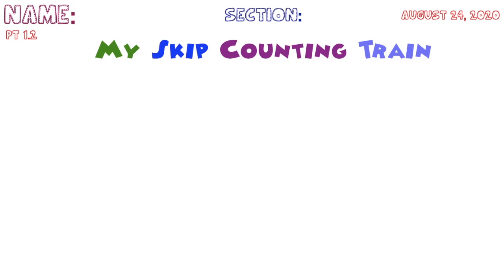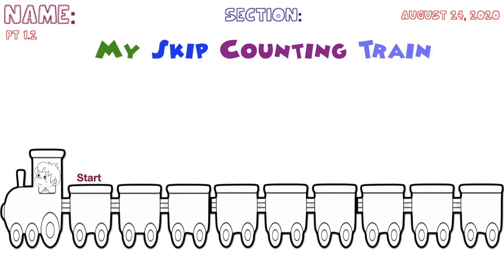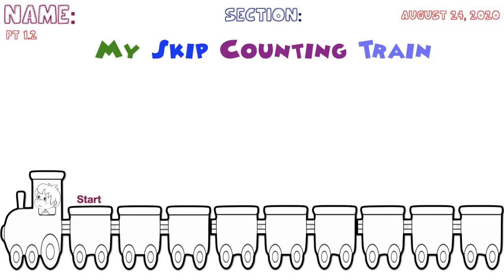At the middle of your paper, you're going to write the title: "My Skip Counting Train." After writing all the information needed, you're going to draw the train.